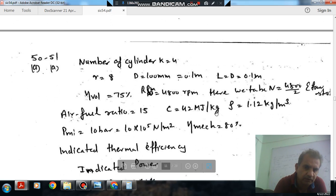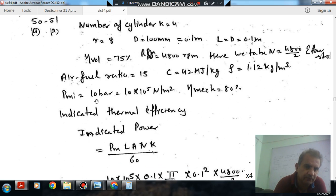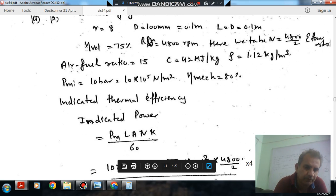The calorific value of fuel is 42 MJ per kilogram and mean effective pressure is 10 bar or 10×10^5 N/m². Mechanical efficiency is 80%. We know that the indicated power is P = LANK, where K is number of cylinders.